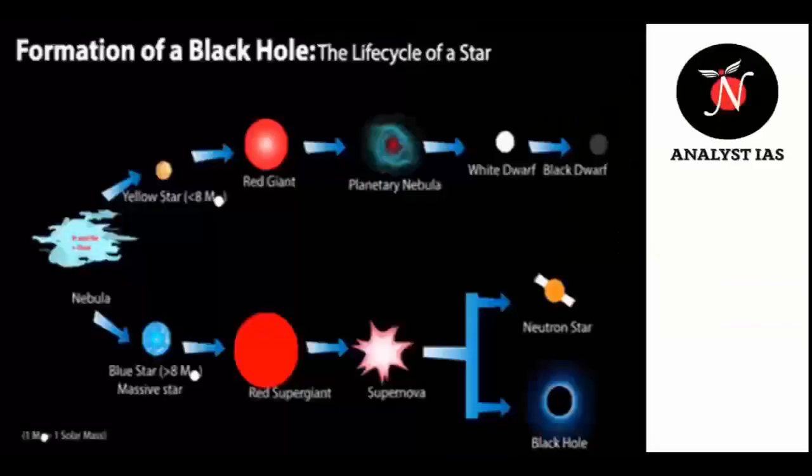Now let's discuss the formation of black holes. Scientists think the smallest black holes formed when the universe began. Stellar black holes are made when the center of a very big star falls in upon itself, or collapses — and when this happens, it causes a supernova. A supernova is an exploding star that blasts parts of the star into space. Scientists think supermassive black holes were made at the same time as the galaxy they are in.